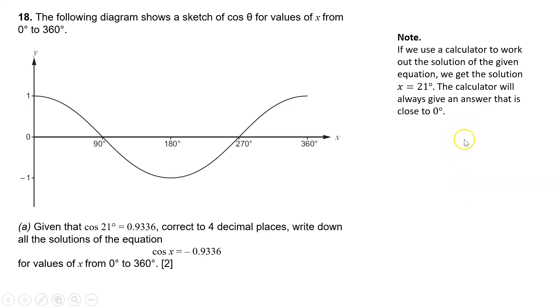If we use a calculator, if we had been able to use a calculator to work out the solution of the given equations, i.e. cos 21 is 0.9336, or cos minus 1 of 0.9336, we would get the solution x is equal to 21. The calculator will always give an answer that's close to 0.